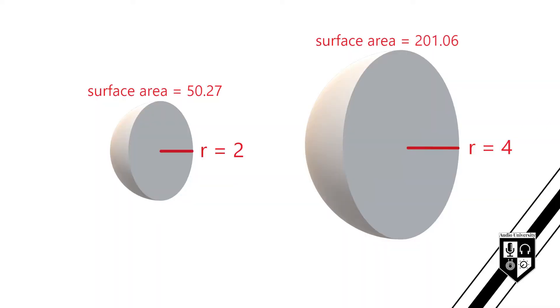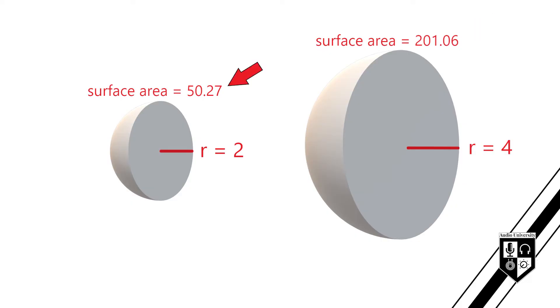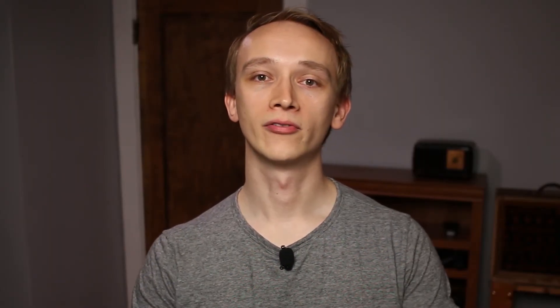While the radius of the second sphere is only twice the radius of the first sphere, the surface area of the second sphere is four times the surface area of the first sphere. The energy from the sound source is now spread out over four times the surface area, resulting in four times less energy per square meter.